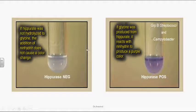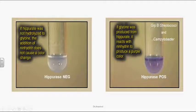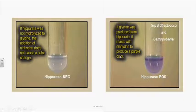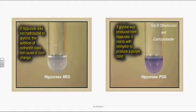In the hippurate test, hippurate is a crystal clear liquid. When these organisms — which possess hippurase enzyme — are added to the hippurate solution, they hydrolyze hippurate to produce benzoic acid and glycine. When ninhydrin is added, it cross-reacts with the glycine produced, leading to a color change in the hippurate liquid, indicating a hippurate-positive result.